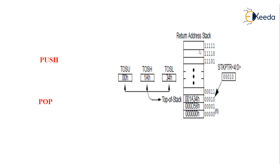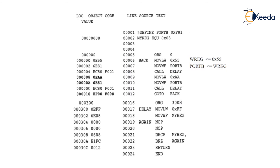The stack pointer is incremented by push and decremented by pop. When data is pushed onto the stack, the stack pointer is incremented automatically by one. When you want to extract data from the stack — pop out the data — the stack pointer pops out that data or address and decrements by one, standing on the next stack location.